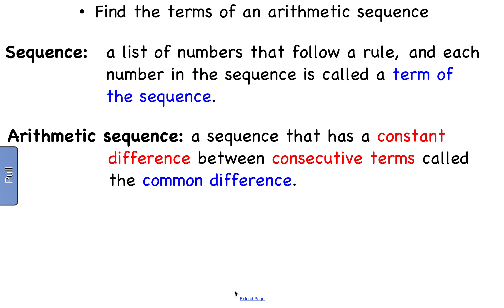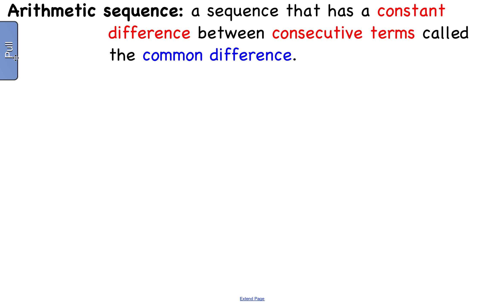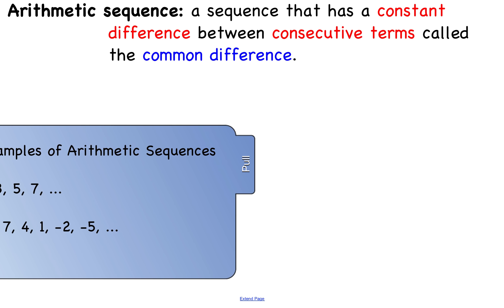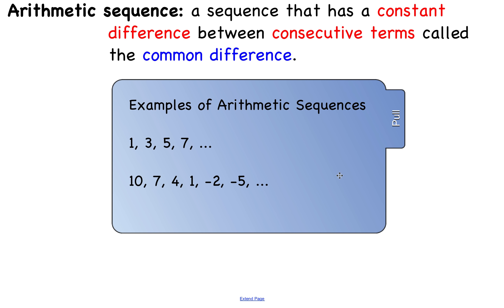Here are some examples of arithmetic sequences. The sequence 1, 3, 5, 7 is an arithmetic sequence — these are going up by 2, so the common difference is 2. The sequence 10, 7, 4, 1, and so on is also an arithmetic sequence because it is decreasing by 3.